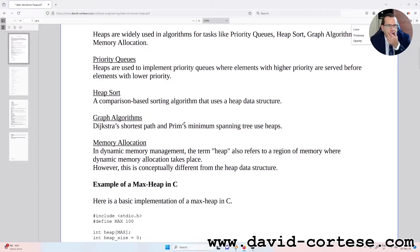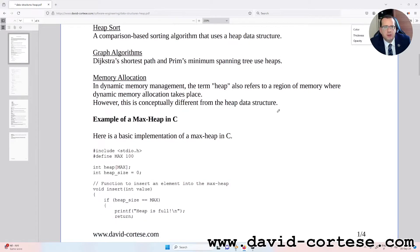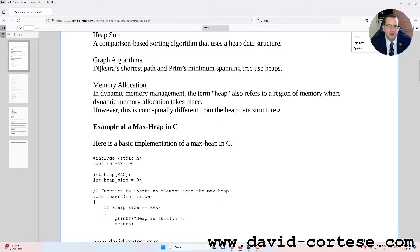Heap sort is a comparison-based sorting algorithm that uses a heap data structure. Graph algorithms like Dijkstra's shortest path and Prim's minimum spanning tree use heaps. Memory allocation: in dynamic memory management, the term heap also refers to a region of memory where dynamic memory allocation takes place. However, this is conceptually different from the heap data structure.